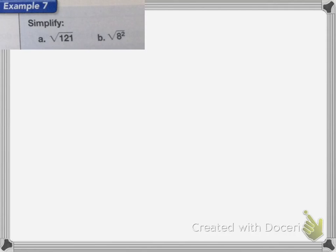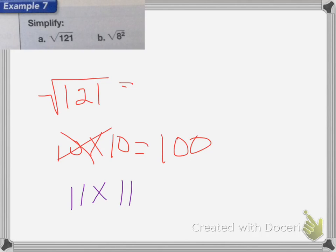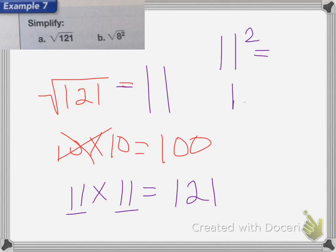This last part of the lesson is square roots. The square root is the opposite of squaring. If I have the square root of 121, I'm looking for what number multiplies by itself to equal 121. 10 times 10 is 100, so the answer has to be bigger than 10. Trying 11: 11 times 11 equals 121. So the square root of 121 is 11. To double-check, 11 squared equals 121 — correct.